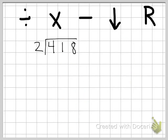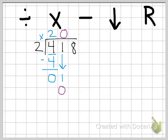Our next problem is 418 divided by two. We start by dividing four divided by two — two goes into four two times. Then multiply: two times two is four. Subtract: four minus four is zero. Then we bring down our one and repeat our steps. The more you do this, the quicker it's going to become. How many times does two go into one? Zero times — if I have one, I can't make any groups of two. Two times zero is zero. One minus zero is one, and then bring down our next digit.